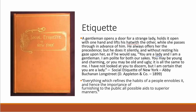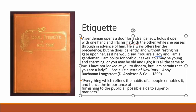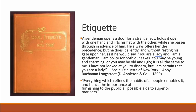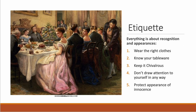Here's an example of an etiquette book. You can see there are many, many rules — everything about how you take your hat off, how you walk with a woman or don't walk with a woman, how you interact with people, what defines a lady and what defines a gentleman. Everything at this time, especially within society, is about recognition and appearance. You have to wear the right clothes, know your table manners, and keep things chivalrous. You were not supposed to draw attention to yourself in any way — etiquette is about silence and quiet, moving through the world without drawing ostentatious attention to yourself. And above all, especially for women, you had to protect the appearance of innocence, even if you weren't innocent.